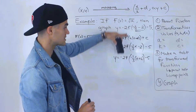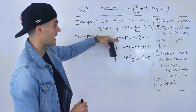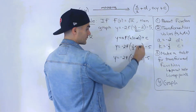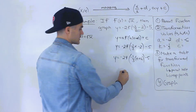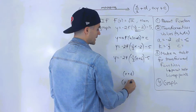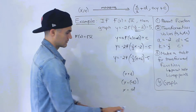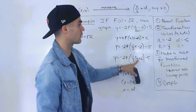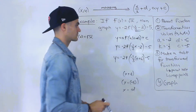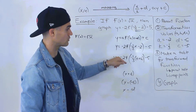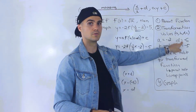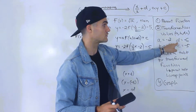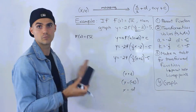So from the rewritten form, we can now read off the transformation values. The a value is negative 2. The k value is negative 1 over 3. The d value is negative 6 — remember, we always change the sign, so x plus 6 is rewritten as x minus negative 6, putting it in x minus d format. The c value is negative 5. If you didn't factor properly, you might think d is positive 2, which is completely different: d of positive 2 shifts right by 2, while d of negative 6 shifts the function 6 units to the left.